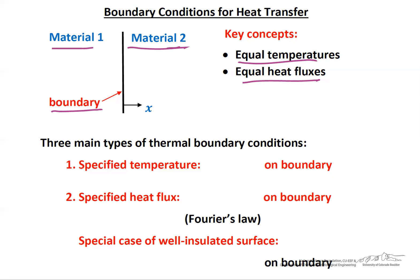These concepts give rise to three types of boundary conditions. The first is simply that the temperature is specified at the boundary, let's call it TS for the surface. An example of this might be a shell-and-tube heat exchanger where steam is condensing onto the tubes — the steam would be at the saturation temperature, and that would be the fixed temperature of the tube wall.